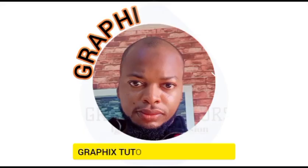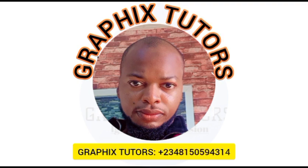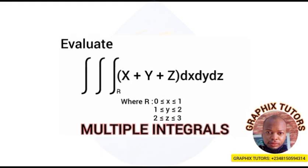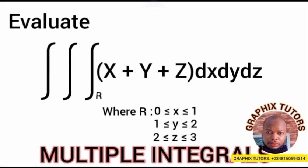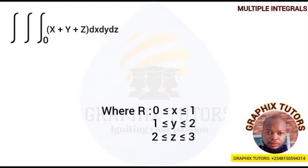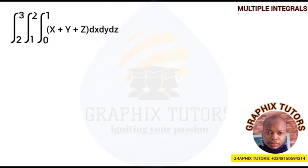Hello everyone, my name is Graphics. We are told to evaluate the triple integral of x plus y plus z with respect to x, y, and z, where the region is bounded by: x moves from 0 to 1, y moves from 1 to 2, and z moves from 2 to 3. Because of these limits, we say these are definite integrals, since integrals with limits are definite.